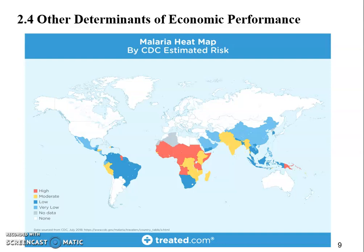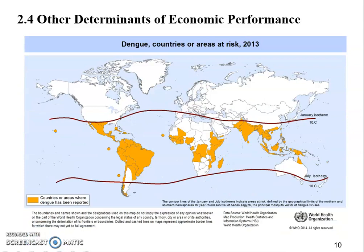As you can find here, most of the red, orange, and even dark blue areas are located in the tropical region. The second map we want to show you is about dengue fever — specifically the countries or areas where dengue fever has been reported.